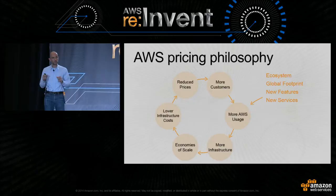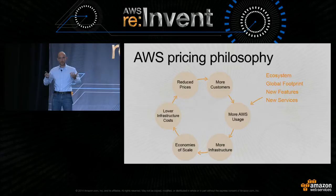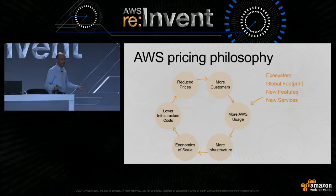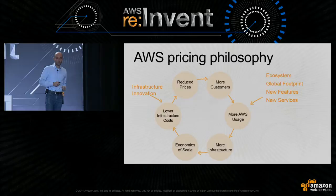There's a large ecosystem of customers and partners using AWS, and new features and services continually bring even more customers in. As we see more AWS users over time, we get to build more infrastructure. The more infrastructure we build, the better we can leverage economies of scale — allowing us to build better data centers that help lower infrastructure costs even more.